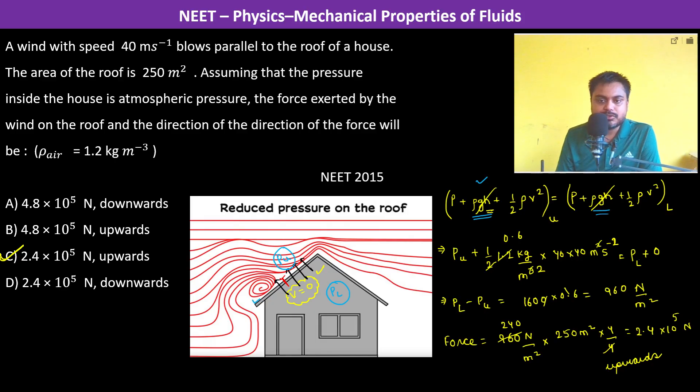Now this is the pressure which is on the upside of the roof, this is the pressure on the lower side of the roof. So P_L minus P_U, that is lower side minus upper side, this comes out to be 960 Newtons per meter squared. So we multiplied with the area because pressure equals force by area. So force becomes pressure into area. Therefore we get 2.4 times 10 to the power 5 Newtons upwards. Thank you.